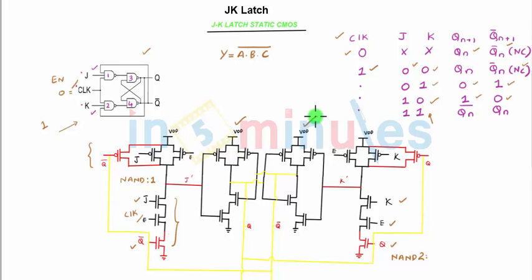Let's quickly go ahead and see a pseudo NMOS style JK latch. The only change would be the pull-up would be replaced by a PMOS that is always on, meaning its input is grounded and equals zero.